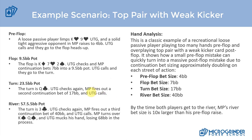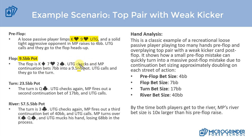Let's take a look at this example scenario. A loose passive player open limps king-nine suited under the gun. A solid tight-aggressive opponent in middle position raises to four big blinds, everybody else folds, and under the gun calls. They go to the flop heads up. The flop is king-seven-deuce rainbow. The pot is 9.5 big blinds. Under the gun checks, middle position fires a continuation bet of seven big blinds, and under the gun check-calls.